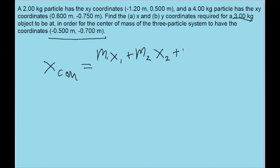We only have three particles here, so it just goes up to three. The mass of the third particle times its position, and all of this divided by the total mass of the system. So m1 plus m2 plus m3.